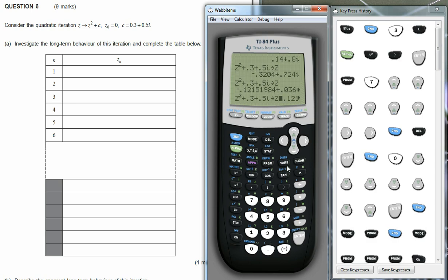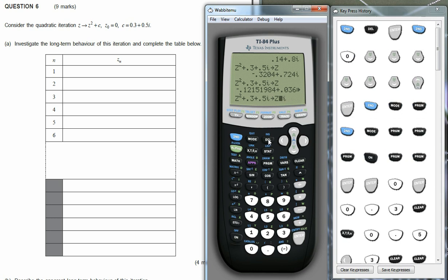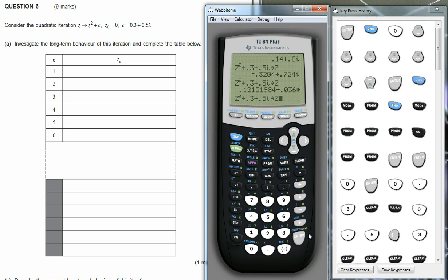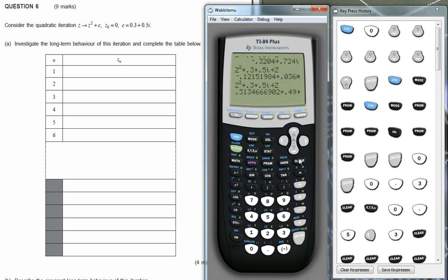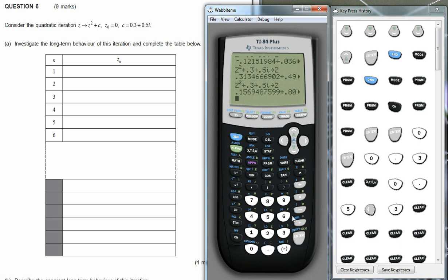And we continue that process, until that gives us the fifth value, I think, from memory, and then lastly, the sixth value. And we can write it in there as we go along.